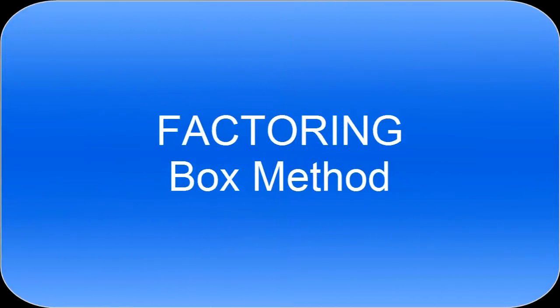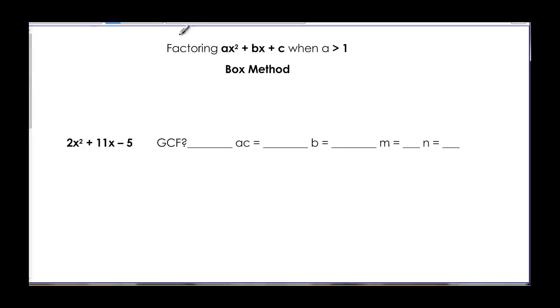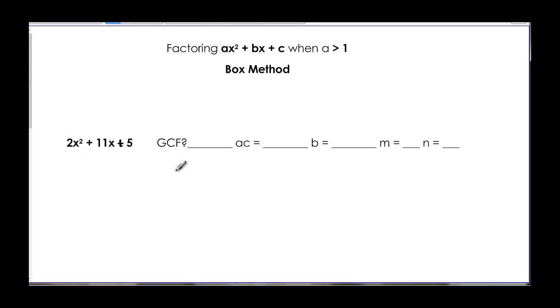This video will talk about the box method. The problem we're going to do is 2x squared plus 11x plus 5. We did this in the last video. I just want to show you the difference between AC method and box method so you can choose which way you like.